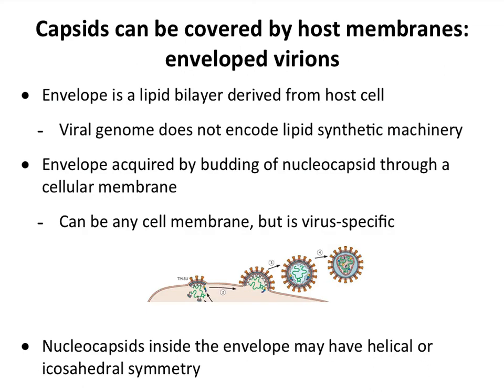Sometimes, as we mentioned earlier, you can add another component to these virions. We talked about helical symmetry and icosahedral symmetry. You can add an envelope on top of that. The envelope is derived from the host cell, and the virus has to get it from the host cell because viruses can't make their own lipids. These envelopes are acquired by budding.